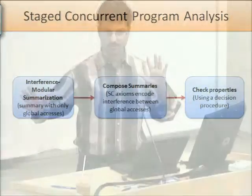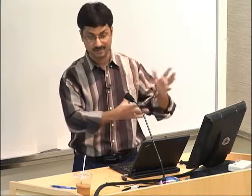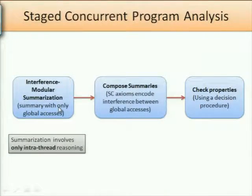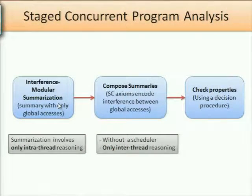The framework has three stages. First, interference modular summarization: introduce a symbolic placeholder and do a data flow analysis locally, leaving reads and writes on global accesses as the summary. Second, link these reads and writes using sequential consistency axioms. Third, check properties using a decision procedure — an SMT solver. This avoids repeated local reasoning and decouples intra-thread and inter-thread reasoning: stage one does only intra-thread reasoning, stage two does only inter-thread reasoning.